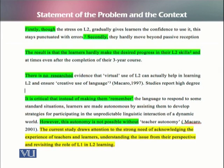پھر gap کو indicate کیا گیا — look at this sentence: there is no researched evidence کہ جس طرح سے یہ stress ہے کہ صرف English پڑھائی جائے اور Urdu یا کوئی regional language نہ آئے۔ اس کو validate کرنے کے لیے opposite argument یہ ہے کہ بچے اگر صرف sentences یاد کریں انگلیش کے بجائے اس کو سمجھیں اور استعمال کریں، تو انہیں فائدہ نہیں ہوگا۔ So this is how in the introduction chapter you can embed your context — larger country context، educational institutions میں کیا issue ہے — and then move on to the statement of the problem in your own institutional context.